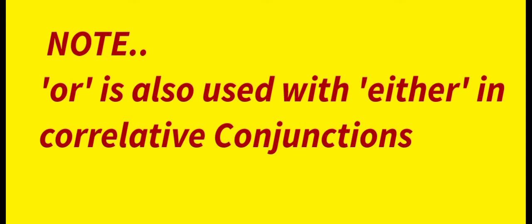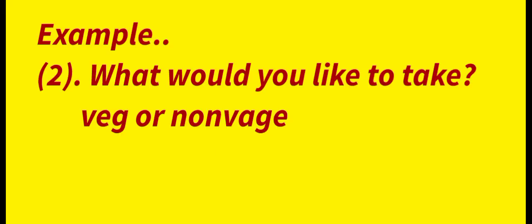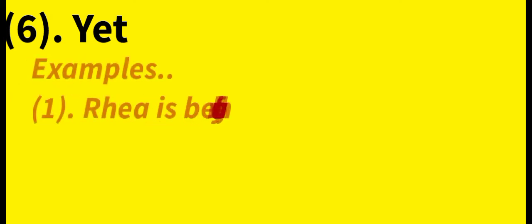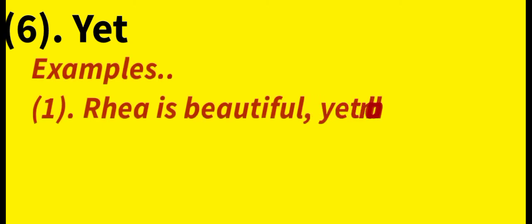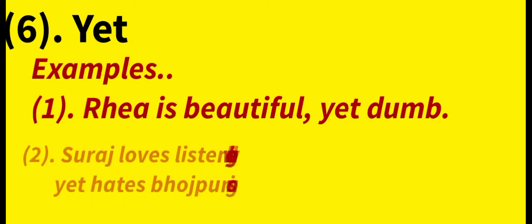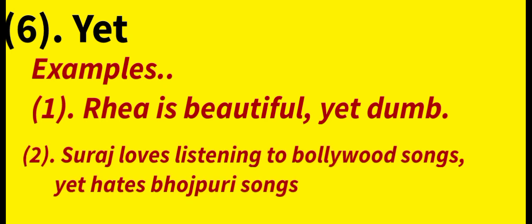The sixth coordinating conjunction is 'Yet.' Yet means 'still' or 'even so.' Example: 'Rhea is beautiful yet dumb.' She is beautiful, but still she is not very smart. Next example: 'Sura loves listening to Bollywood songs yet hates Bollywood songs' — showing a contrast or unexpected result.